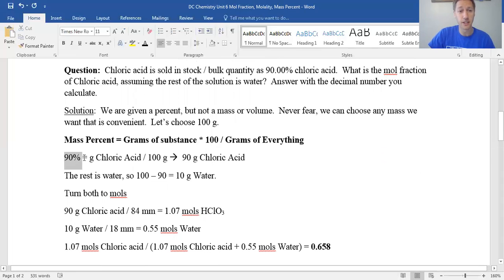So choosing 100 grams, we'd say, okay, well, 90% of this is chloric acid. So 90% equals grams of chloric acid, we chose grams of everything to be 100, that'd be 90 grams. So again, 90% solution, if it's 100 grams, 90 grams, that'd be chloric acid, but the rest is water. So 100 grams total minus the 90 for the chloric acid, 10 grams of water.